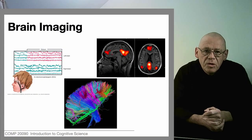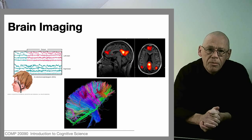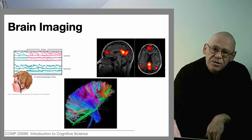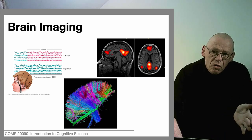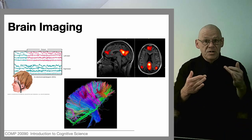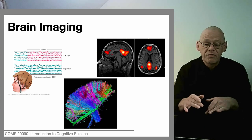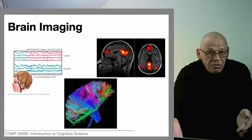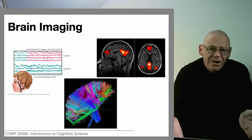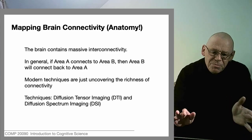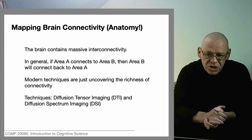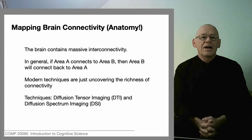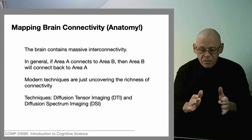Staying with the theme of brain imaging, we're going to review two more approaches. The first one is anatomical. EEGs were recording ongoing changes in electrical activity — that's physiological. Anatomical investigation is concerned with what structures are there in the brain, what bits are there, and how they connect up — specifically which nerve cells are connected to which other nerve cells.